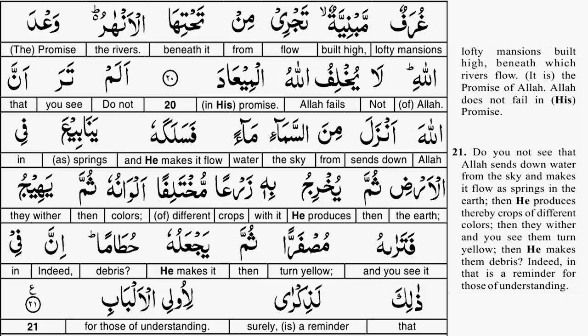Then eventually it comes out — naturally filtered water. Summa yukhriju bihi — from this water Allah causes to grow, because of it, zara'a. Look at where the water came from: somewhere in the sky, so much happened in the sky, water fell down, absorbed by the earth, came out as spring water, and sometimes springs also form lakes. And then from that — so much crop, so much vegetation. Zara'a is specifically used for crop, meaning that which people consume.